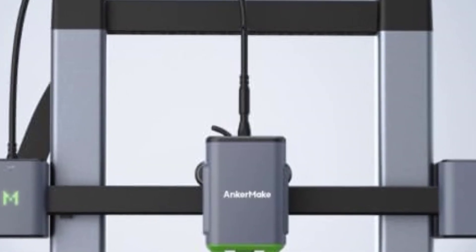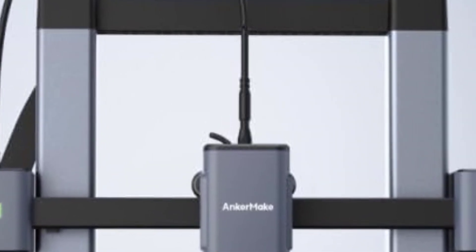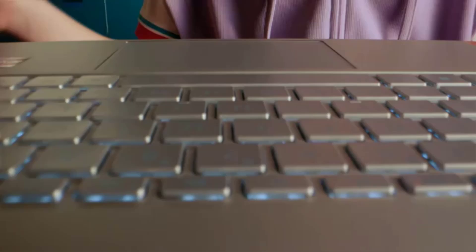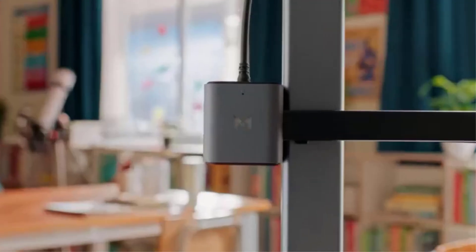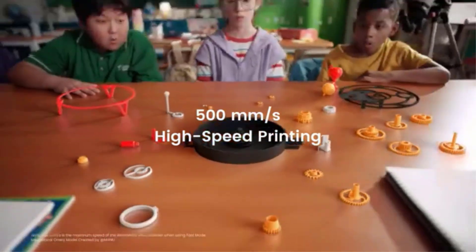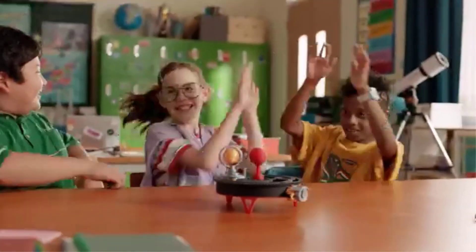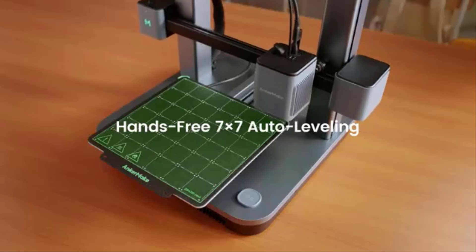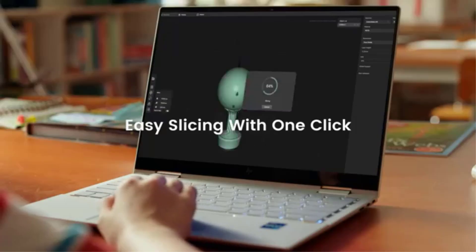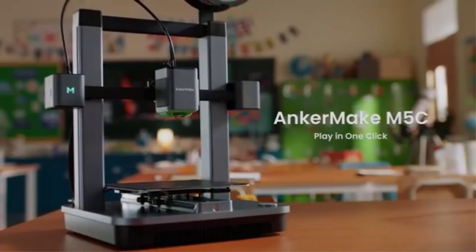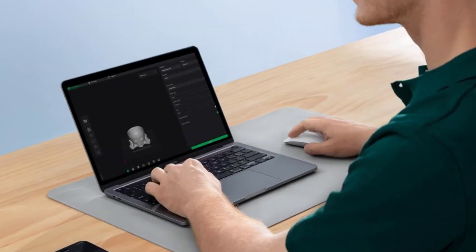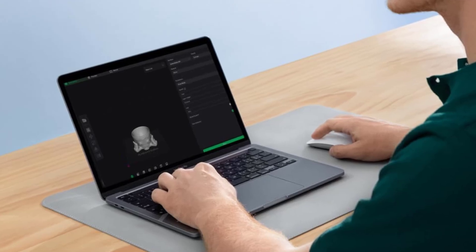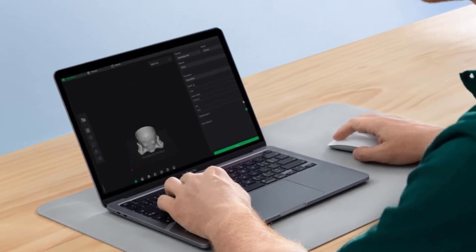With its rigid aluminum frame, the M5C provides high stability during printing, minimizing vibrations and ensuring precise results. The printer's direct drive extruder enhances filament control, reducing the risk of clogging and stringing, especially when working with flexible or high-temperature materials. Designed with convenience in mind, the one-click printing function simplifies the printing process, making it accessible even to users with minimal experience. Additionally, the fast assembly and setup ensure that users can start printing quickly.